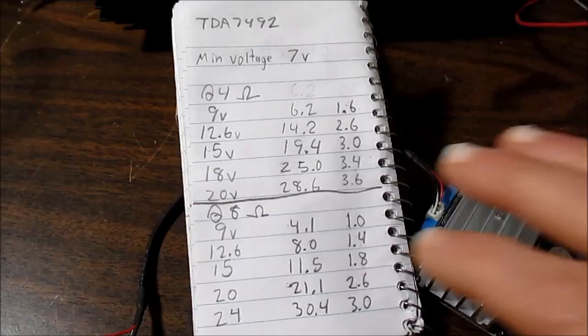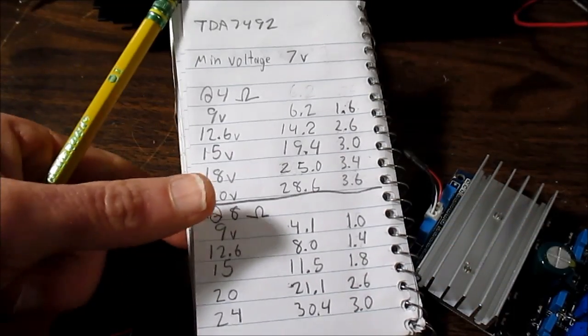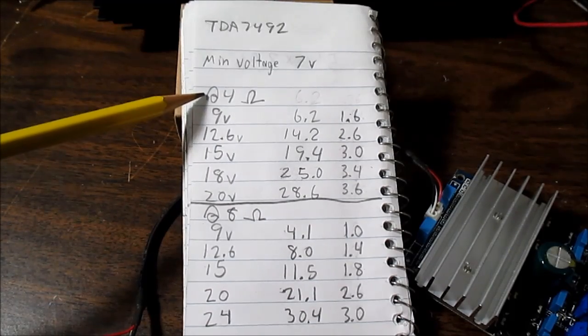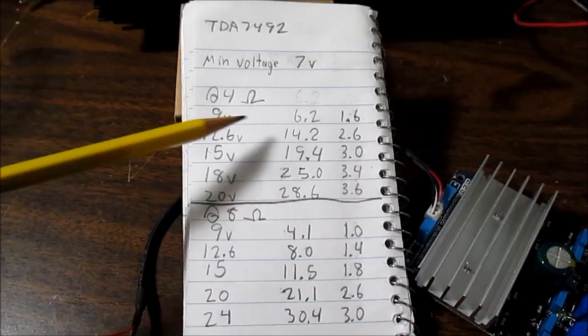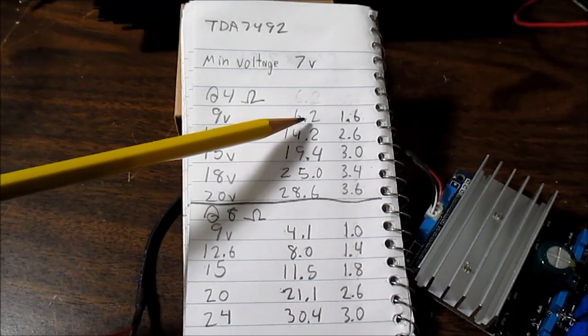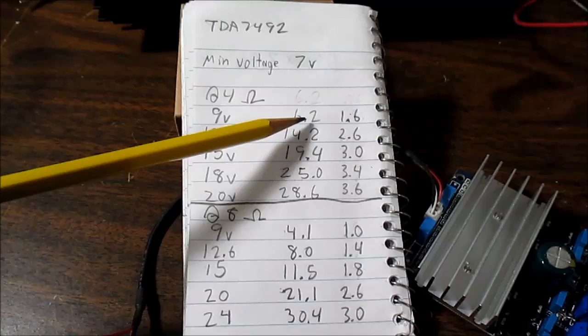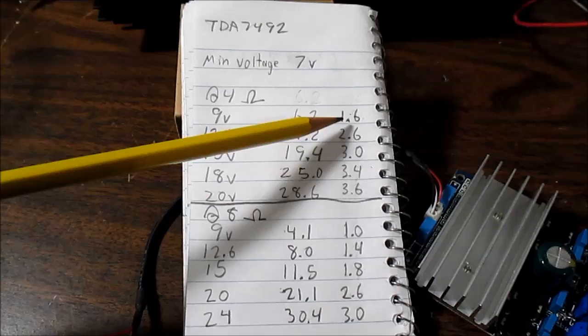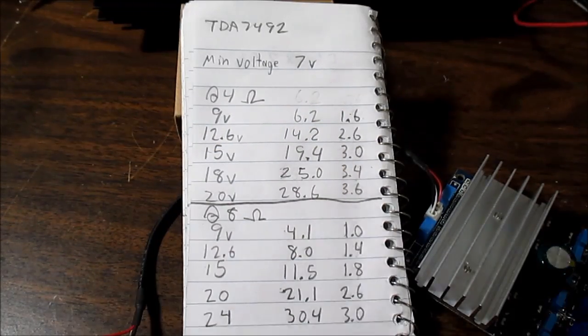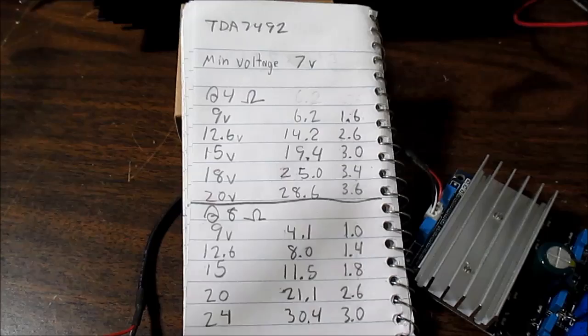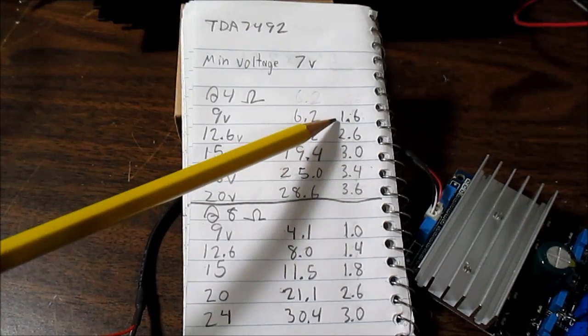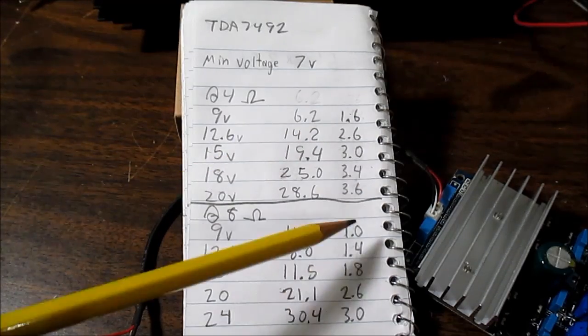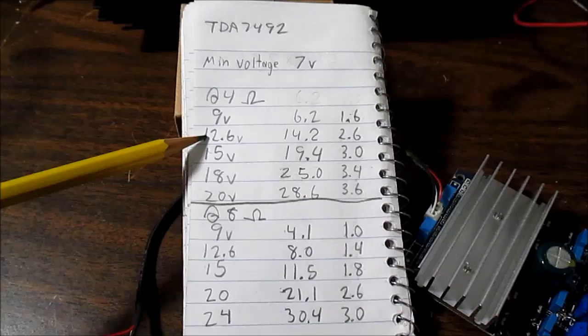Okay, here are the power results from the TDA 7492. First, at 4 ohms with 9 volt supply we got 6.2 watts of clean power per channel. This column here is the current that was drawn off the power supply. I have to remember to double the number that's read because the channels are paralleled. So it drew 1.6 amps. And I won't mention that for every entry here.